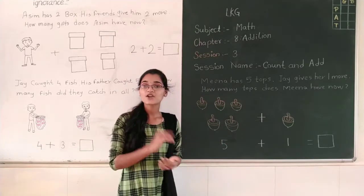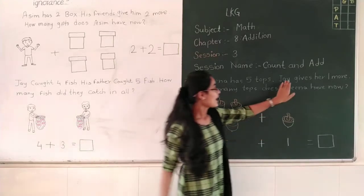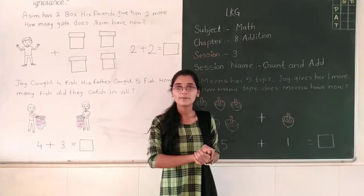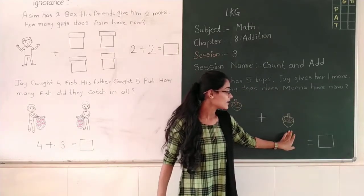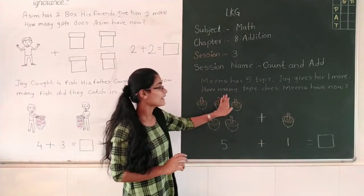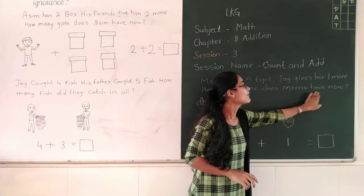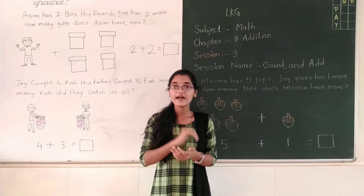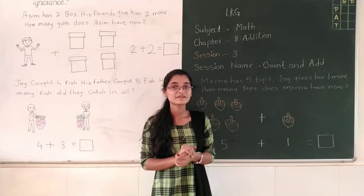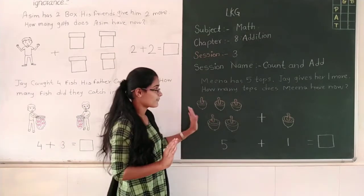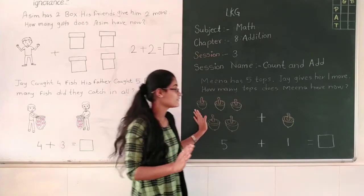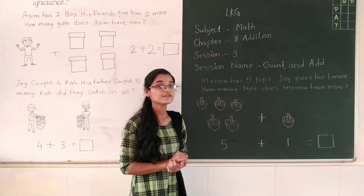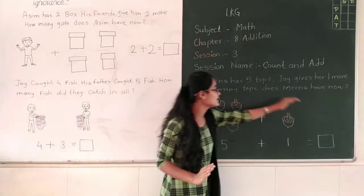Meena has how many tops? 5 tops. And Jai gives her 1 more top. How many tops are here? 1. How many tops does Meena have now? Tell me. Meena has 5 tops and Jai gives her 1 more top. So you have to count all these tops.